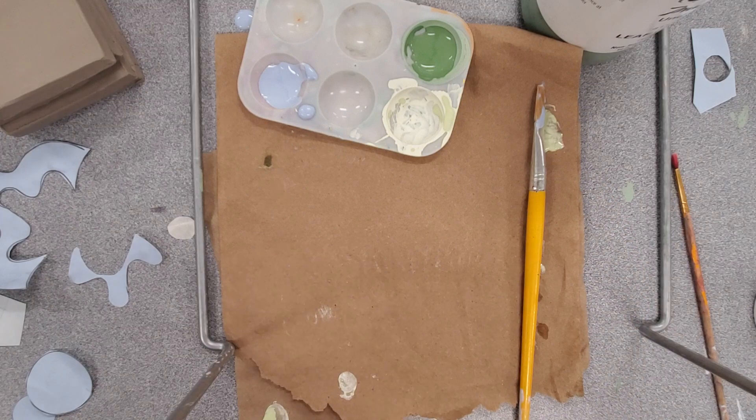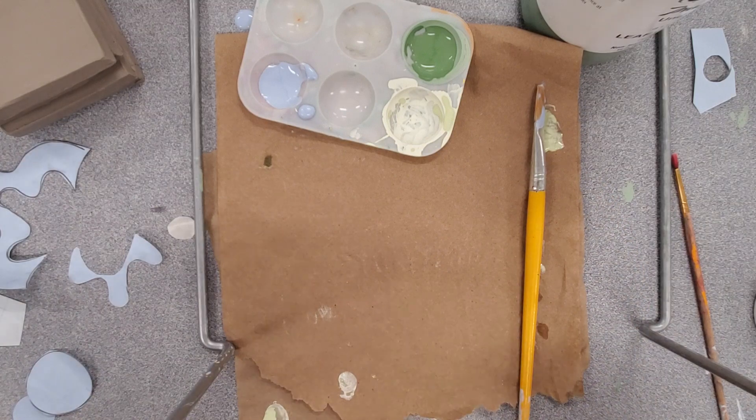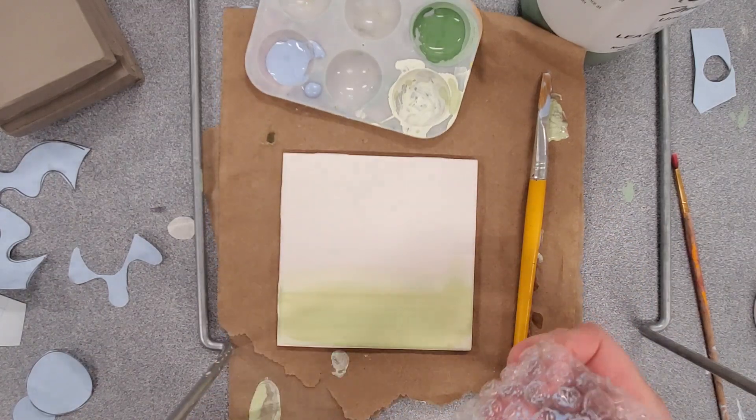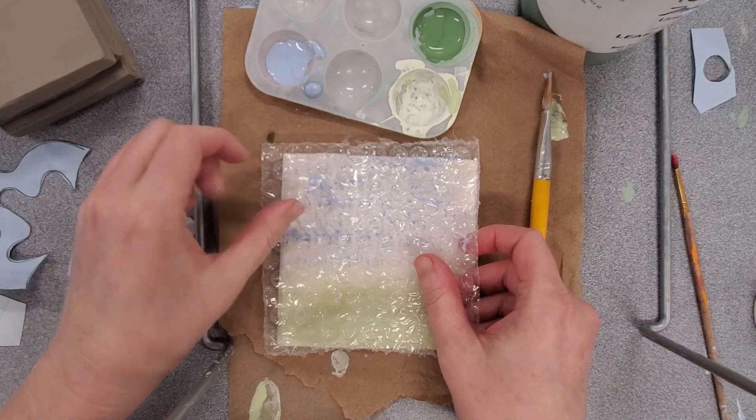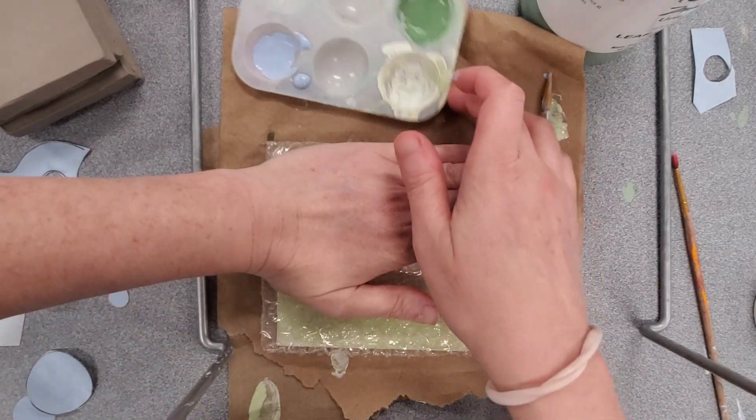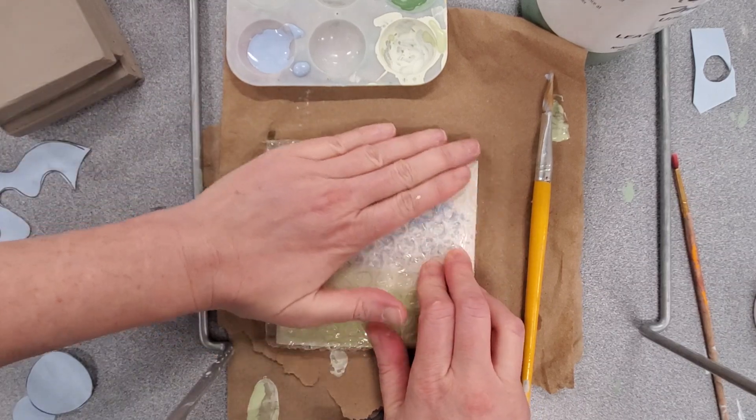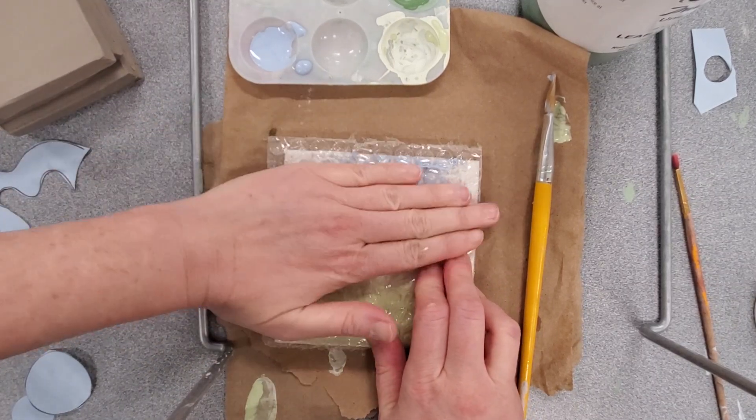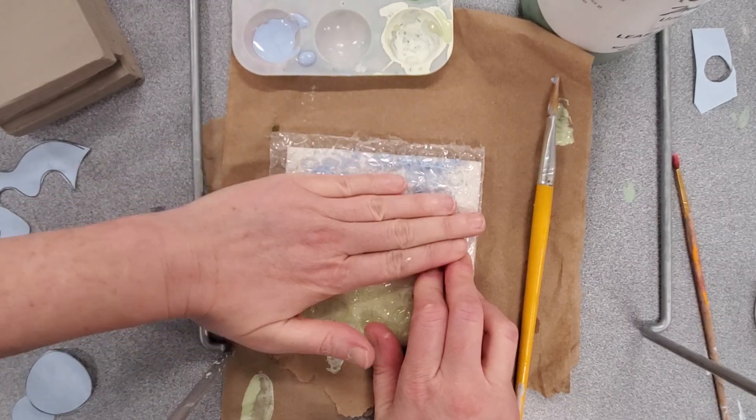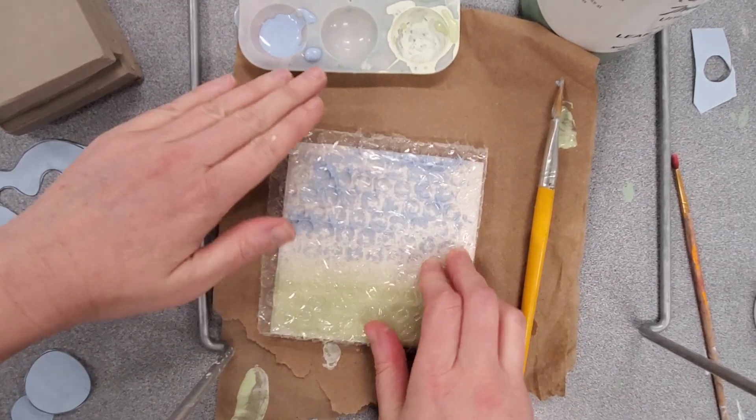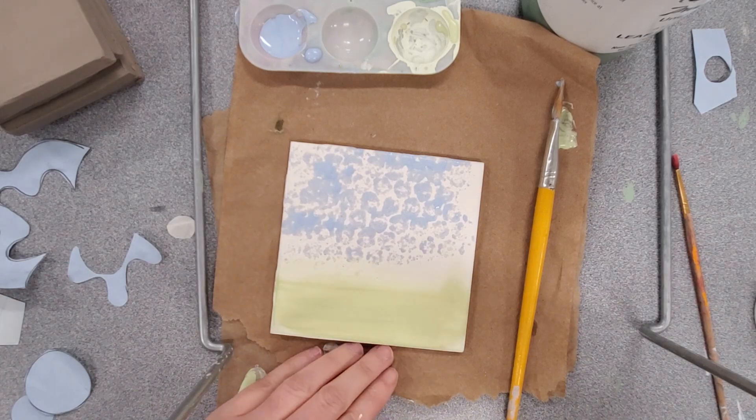I'm going to take this on my tile, turn it face down and put some pressure with my hand on it. Hold it steady, put even pressure on it, try not to move the paper and peel it up.